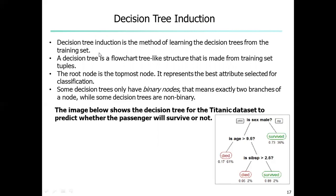The root node is the topmost node and represents the best attribute selected for the classification. To identify the root node, we use a calculation formula where the majority of numbers will have maximum support — that means the node with the highest safe-zone support is considered the root node. It represents the key point of the data set. The internal node or decision node represents the test of an attribute of the data set, while the leaf node or terminal node represents the classification or decision of the data set.